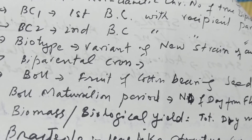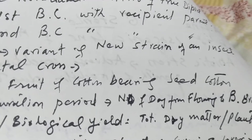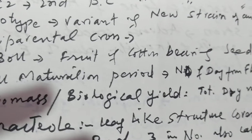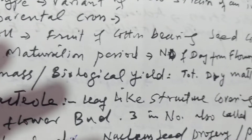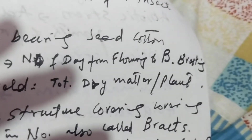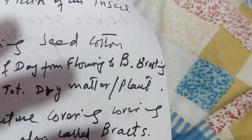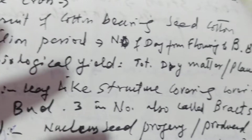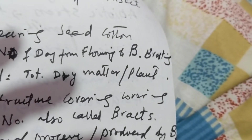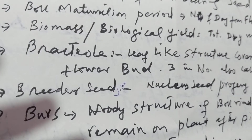Biotype is a variant or new strain of an insect. Boll is the fruit of cotton bearing seed cotton. Boll maturation period is the number of days from flowering to boll bursting. Biomass or biological yield is the total dry matter per plant.